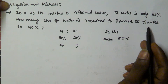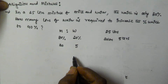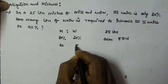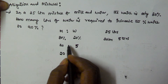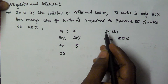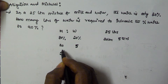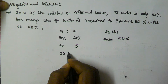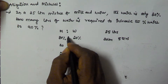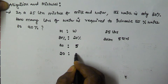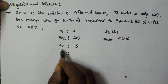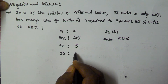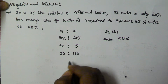We have to increase the percentage of water to 90 percentage. Since we are only increasing the water, we keep the milk quantity constant at 20 liters. So if the water becomes 90 percentage, then the milk will be only 10 percentage of the new mixture.